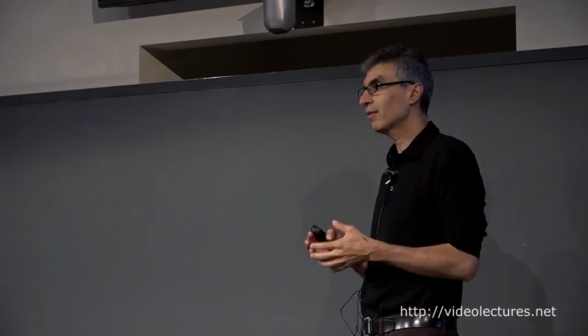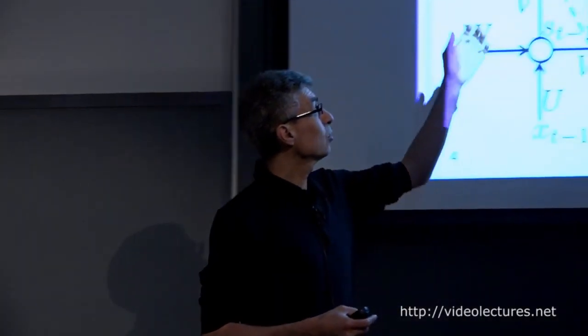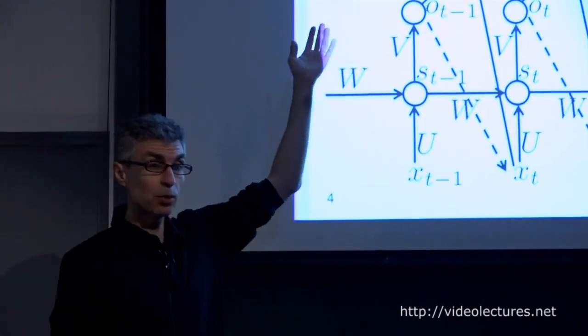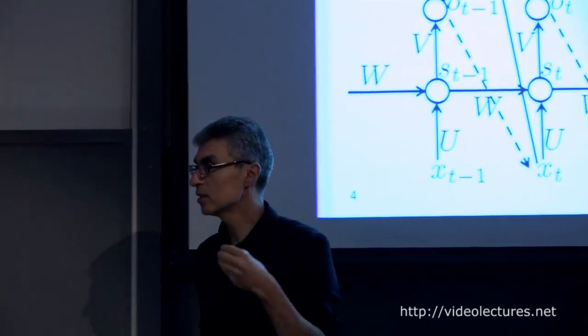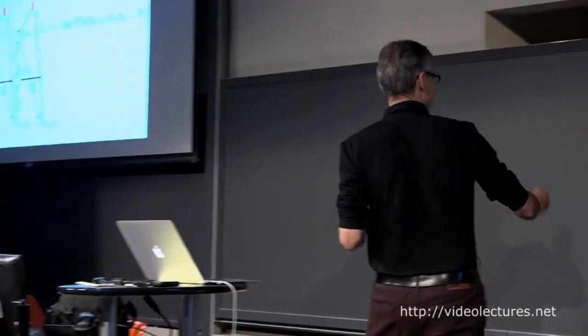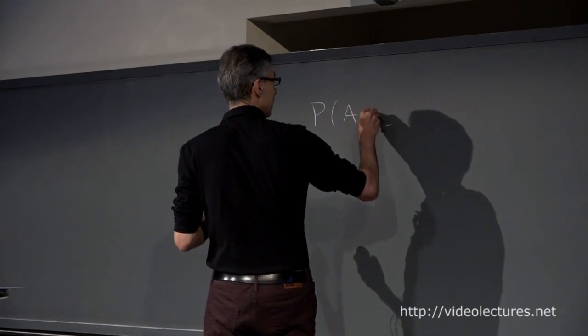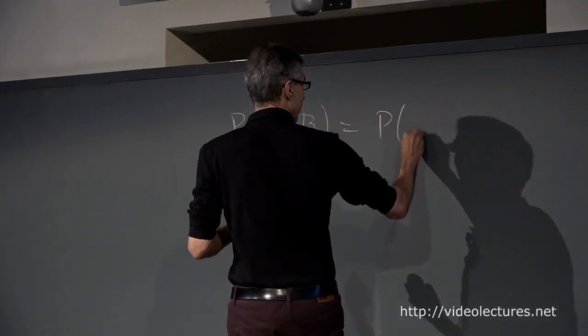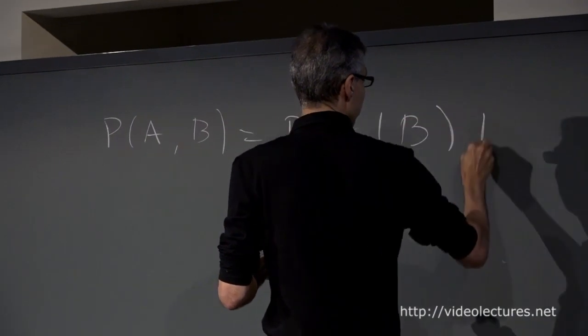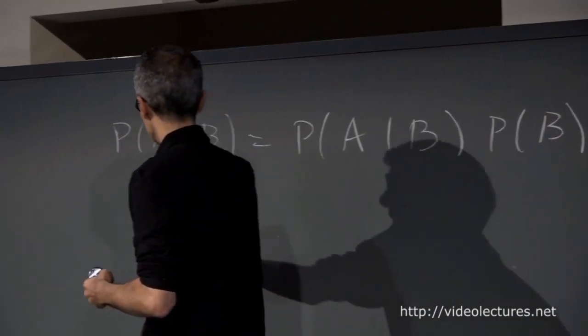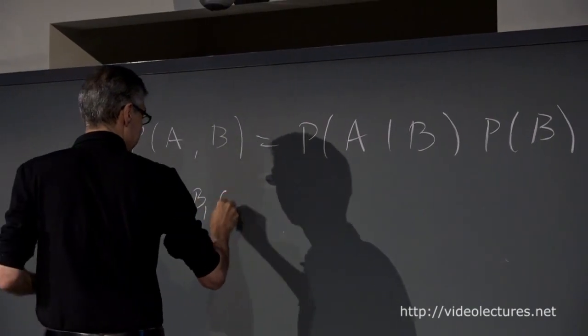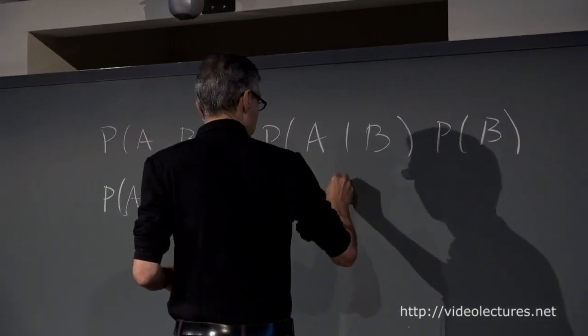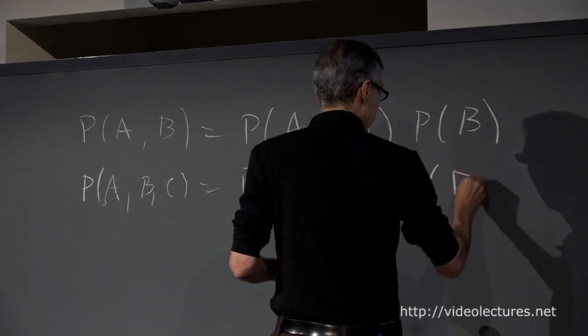With recurrent nets we can deal with variable-length data and compute something like this joint probability. We're going to decompose the joint as a product of conditionals. This comes from the definition of conditional probability: p(a, b) is just p(a | b) times p(b). If we apply this recursively — for p(a, b, c) — we get the product rule, and that's exactly what we have here, replacing a, b, c by x_1, x_2, x_3, x_4.